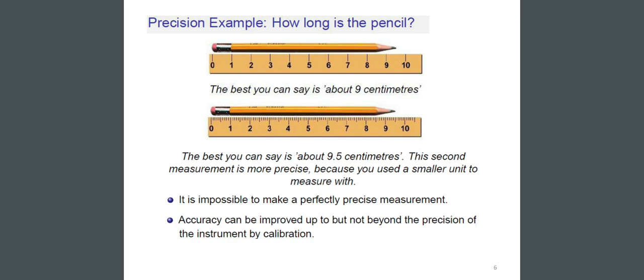There is an example of precision: How long is the pencil? Look at these two figures, almost the same but not the same. The first figure: the best you can say is about 9 centimeters. But in the second figure, the best you can say is about 9.5 centimeters. The second measurement is more precise because you used a smaller unit to measure with. It is impossible to make a perfectly precise measurement.